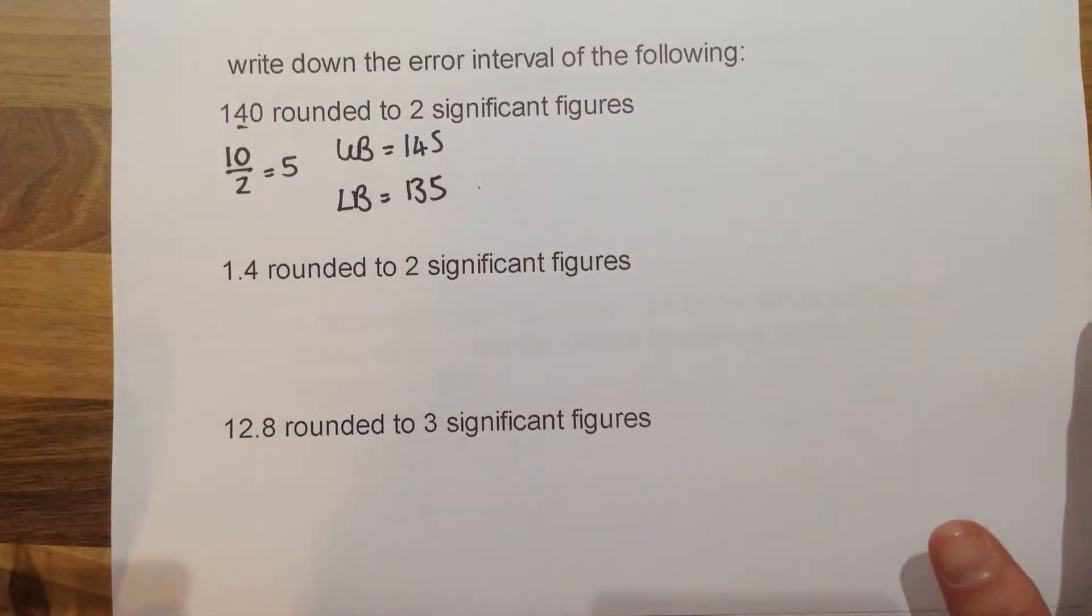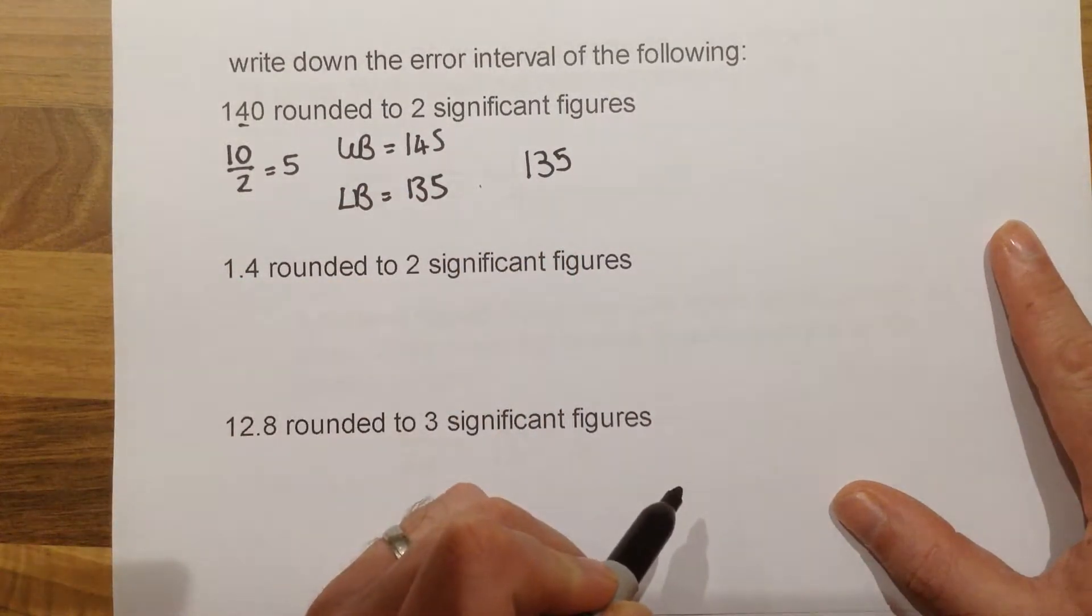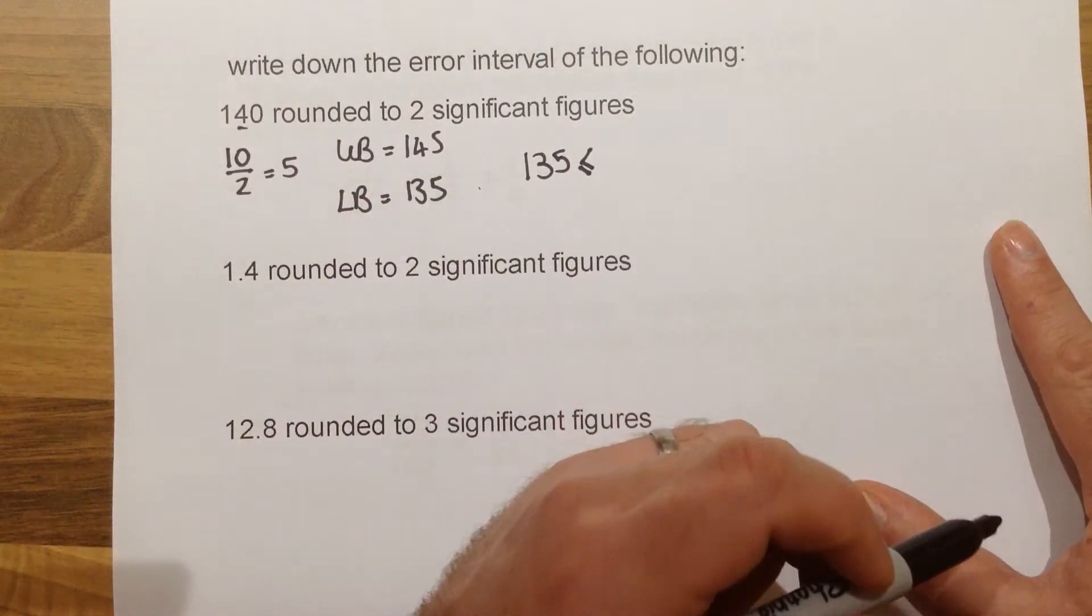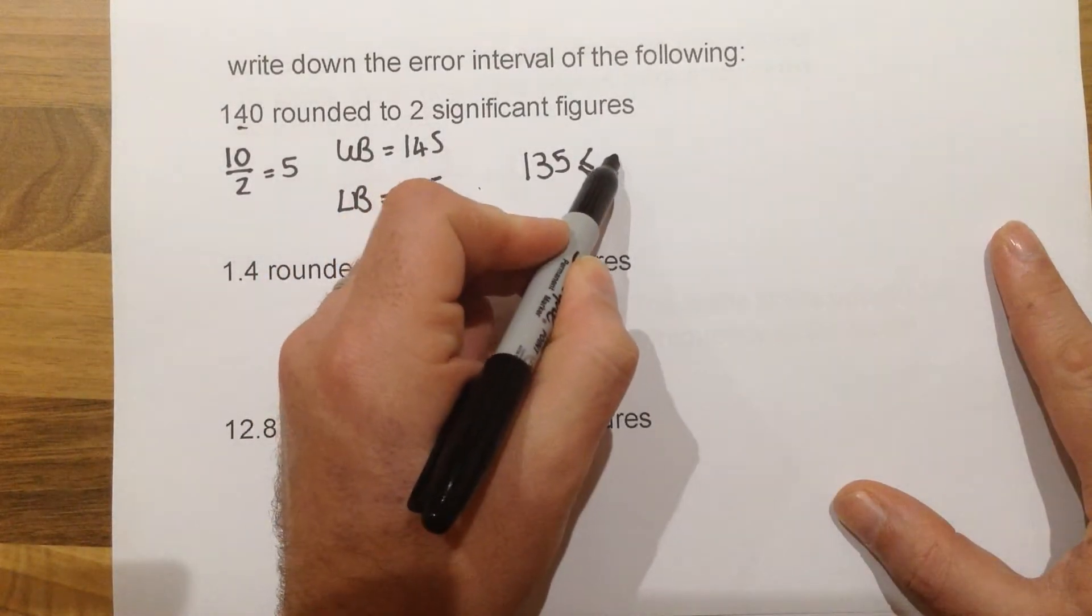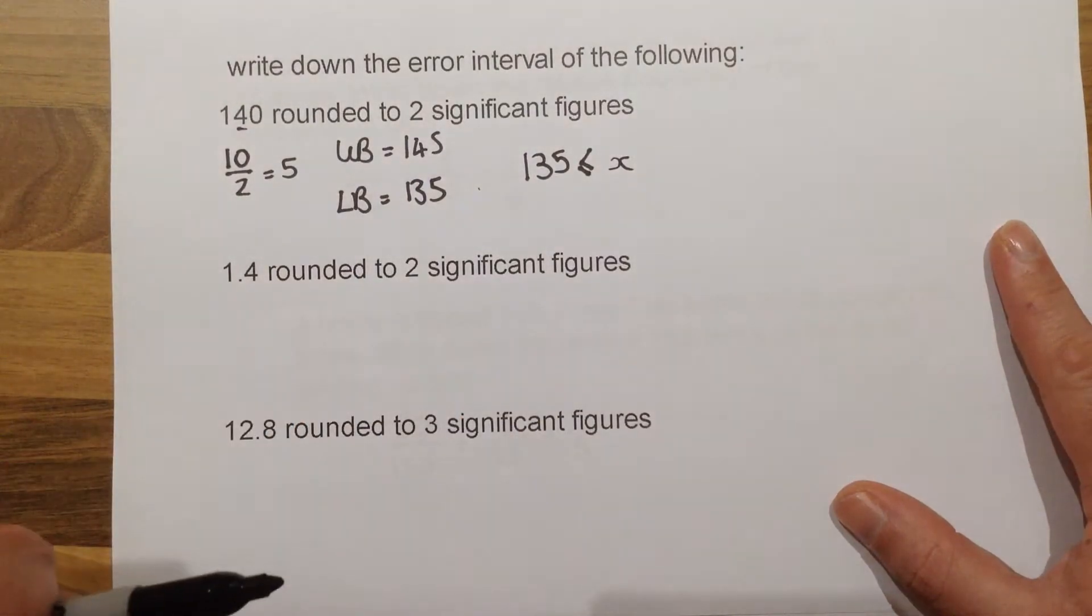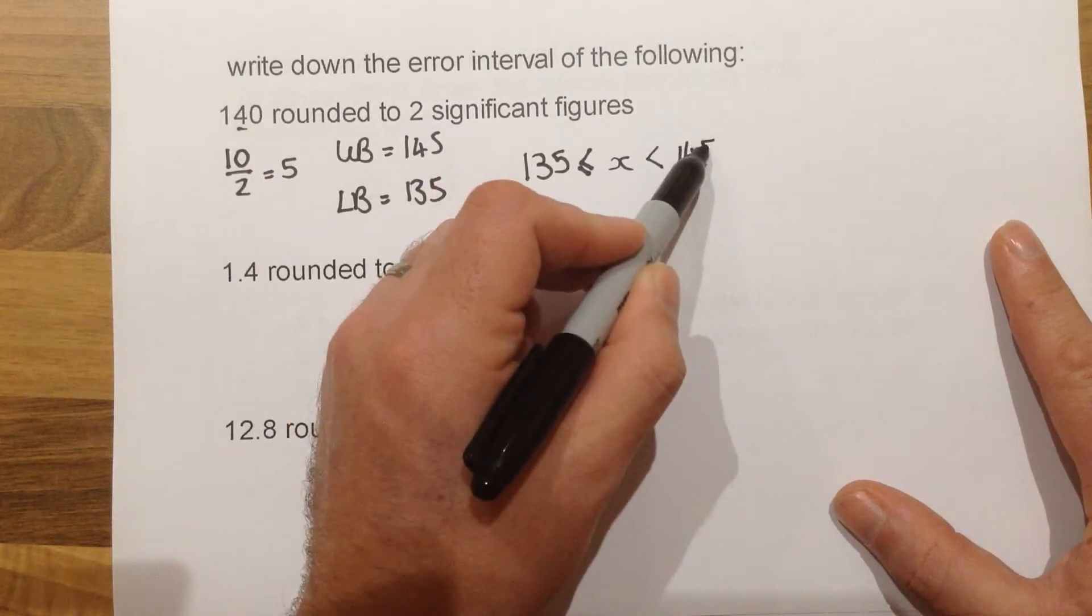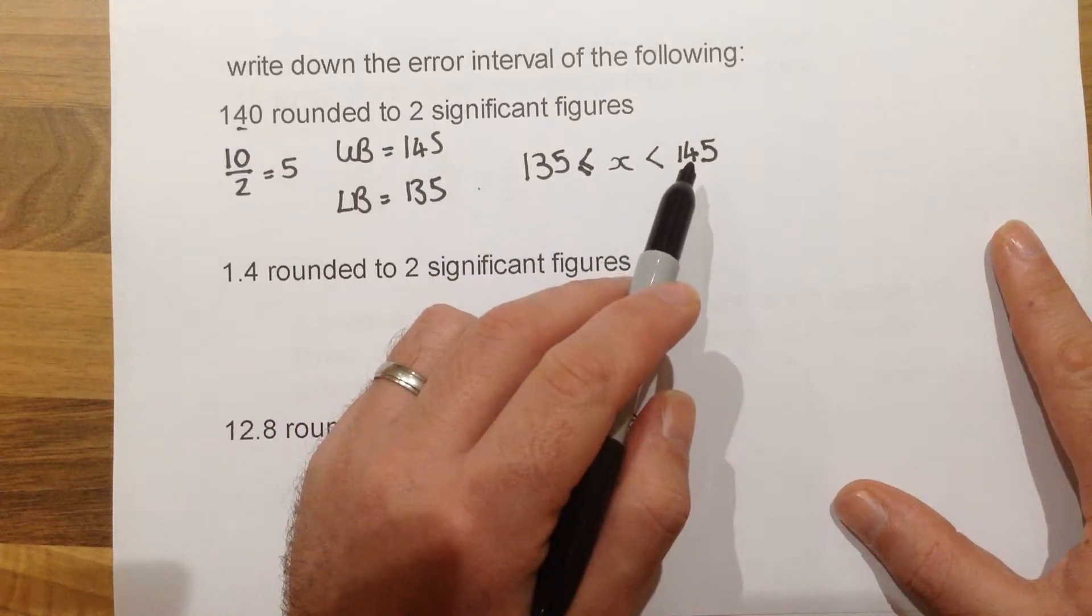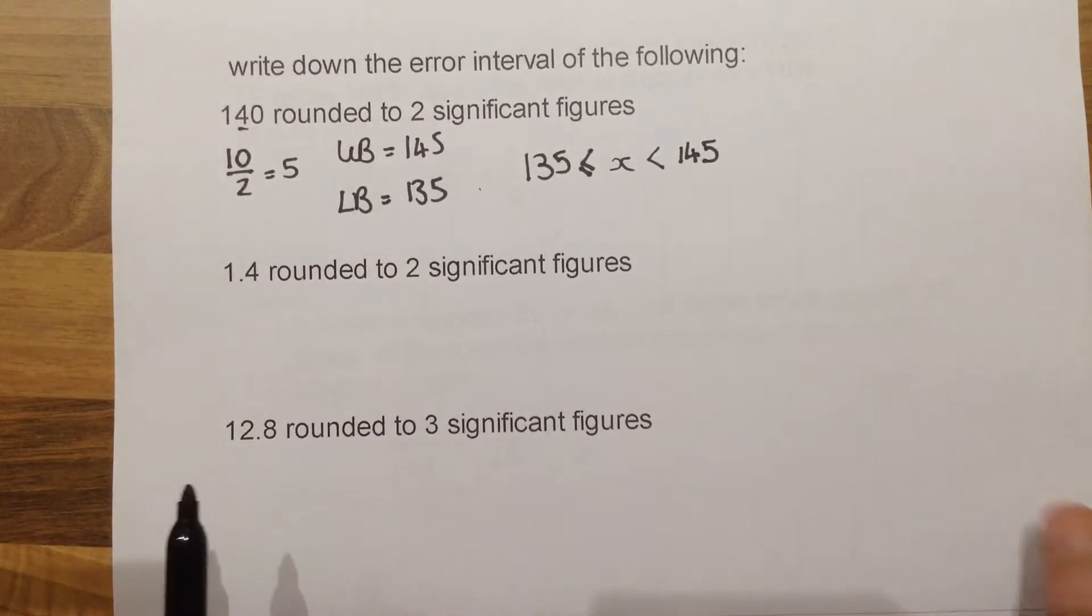Now, if we want to write this as an error interval, what we would need to do is use inequality symbols. So this we would write as 135, being the smallest thing our number could have been, less than or equal. The lower bound will always have the equal section, because a smaller number will always round up. We put a letter in the middle. I normally use X. Is less than 145. The reason this one is just less than, without the extra line underneath, is because 145 rounded to the nearest 10 would actually go up to 150. So this shows it's everything up to, but not quite 145.